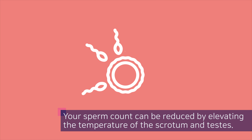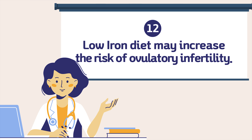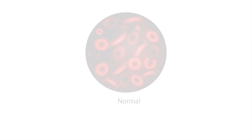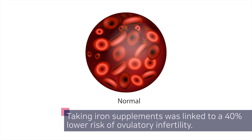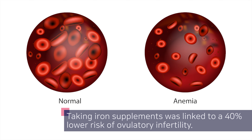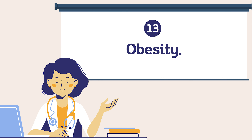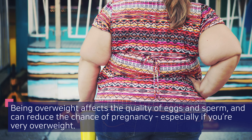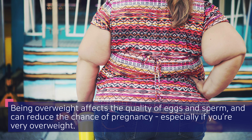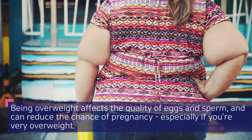Eleven: men should keep away from heat, as your sperm count can be reduced by elevating the temperature of the scrotum and testes. Twelve: a low iron diet may increase the risk of ovulatory infertility. Taking iron supplements was linked to a 40 percent lower risk of ovulatory infertility.